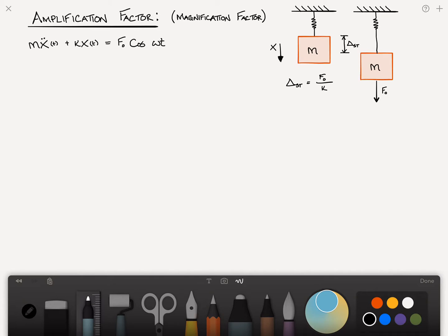So in other words, if we just applied non-harmonic force, but a constant force, and we did it very slowly so that there was no dynamics in this problem, we would expect the spring, which I should label has a stiffness k, to deflect by an amount delta sub st, delta static.